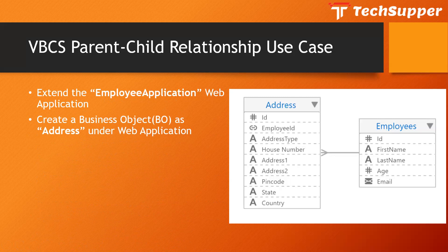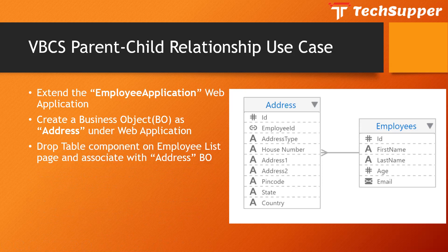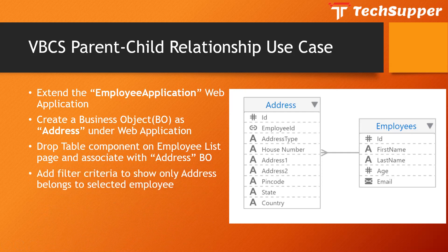We are going to create another object called address under that web application. The address object will have columns like employee ID, which refers to the primary ID of the employees, address type, house number, address one, address two, pin code, state, and country. We will drop a table component on the employee list page, associate it with the address business object, and add a filter criteria so that only addresses associated with the selected employee are displayed.